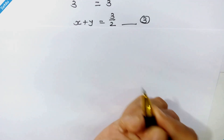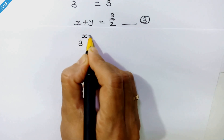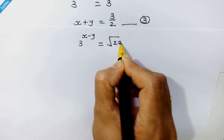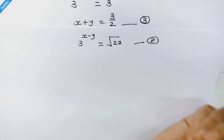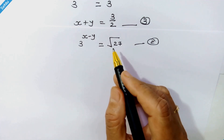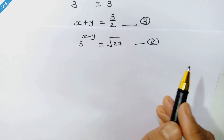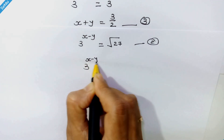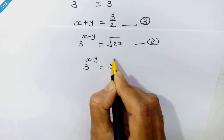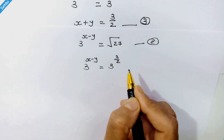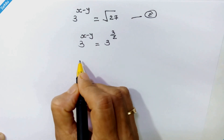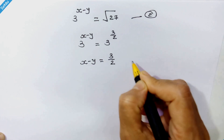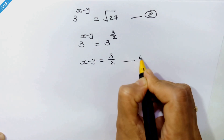Now taking equation 2, which is 3 raised to x minus y is equal to square root of 27. We operate the right hand side in the same manner as equation 1, so we get 3 raised to x minus y is equal to 3 raised to 3 upon 2. Equating the exponents: x minus y is equal to 3 upon 2. Let's call this equation 4.